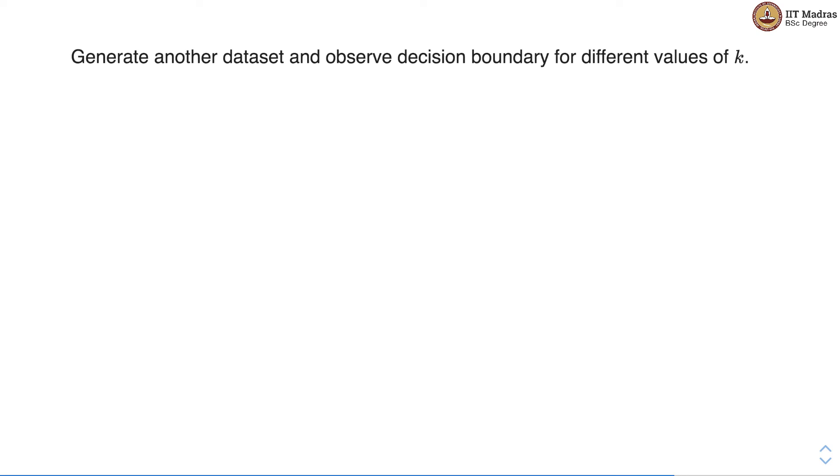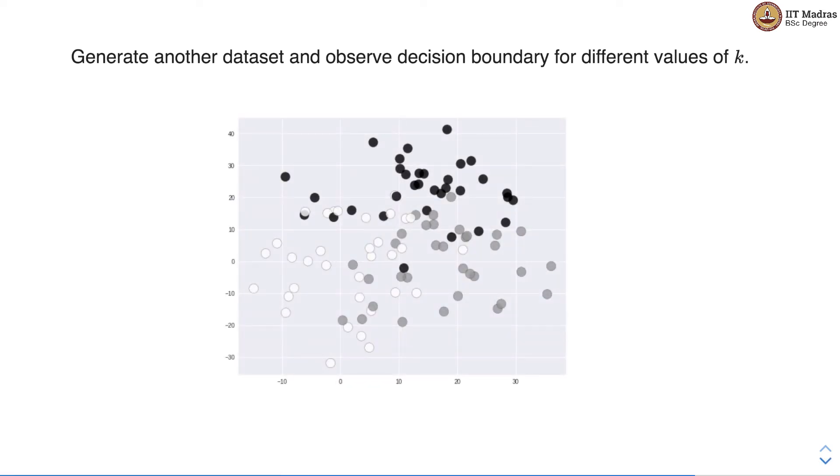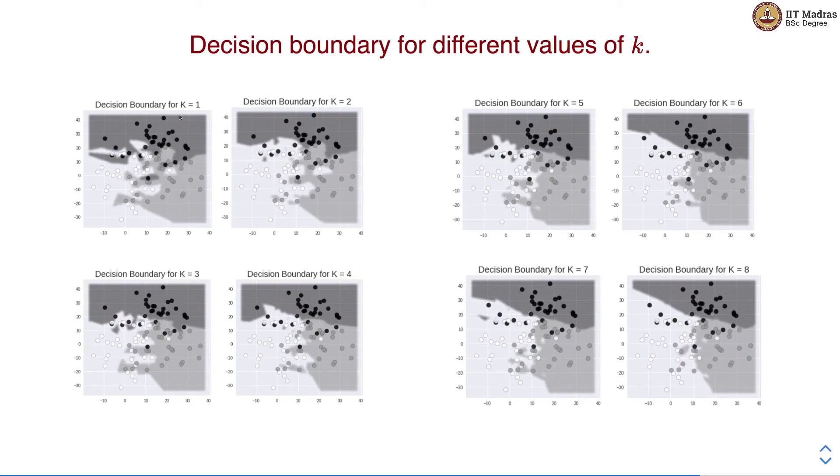So here we'll generate another data set and observe decision boundary for different values of K. So this is our new data set which has three classes: black, white and gray. We have used different values of K and visualize the decision boundary for this three class classification problem. As you can see that when the value of K is small the decision boundary is pretty jagged, but as we move towards larger K the decision boundary is becoming smoother.